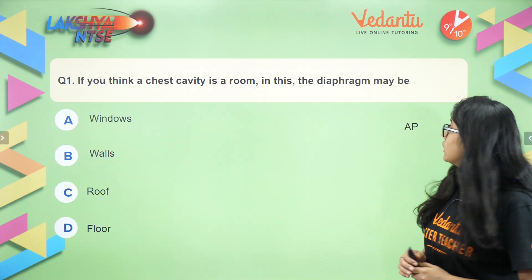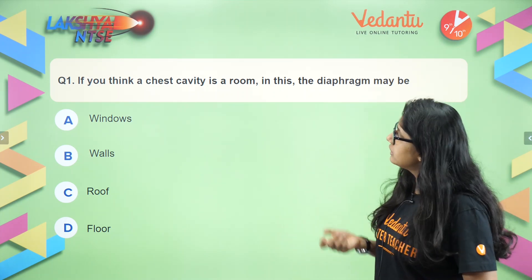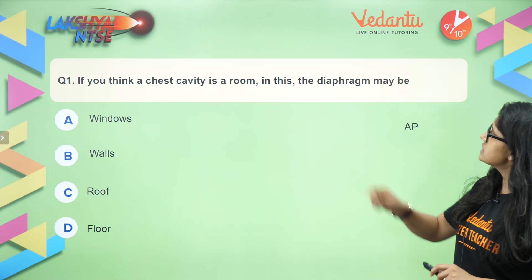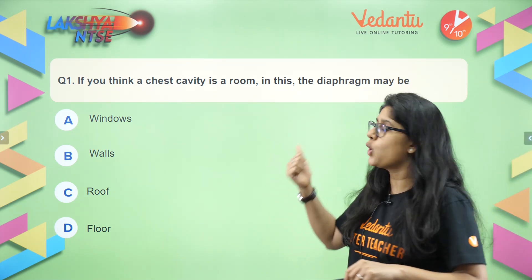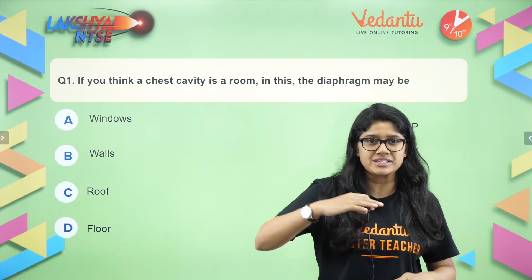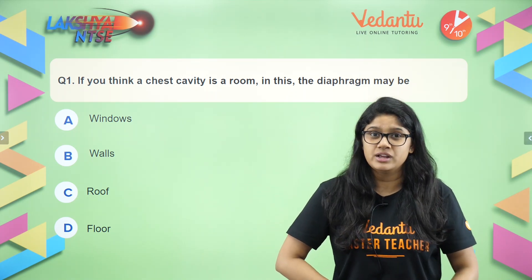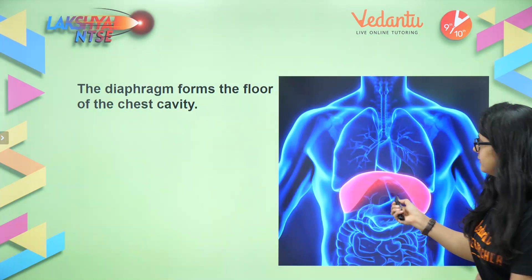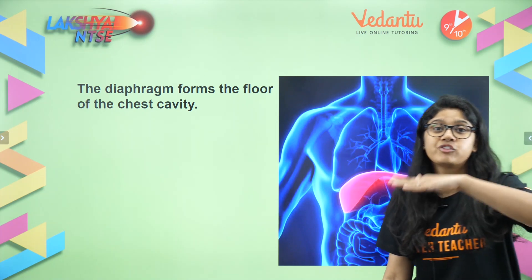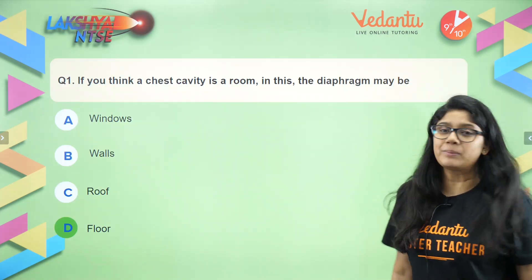Here is question number one, from Andhra Pradesh state. If you imagine that our chest cavity is like a big room, what might the diaphragm represent? We know that the diaphragm helps in the movement of the lungs up and down — it goes down when you inhale and comes up when you exhale. The right option is that it acts as a floor, because the lungs rest on it and move up and down. So the right answer is option B.